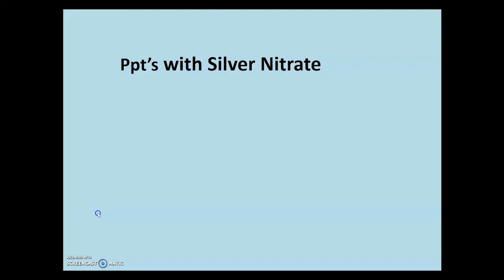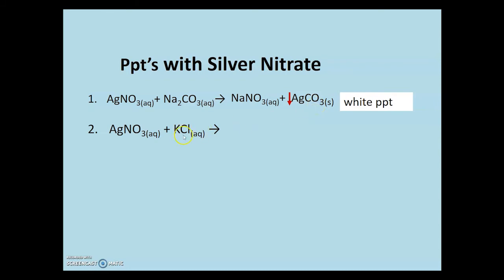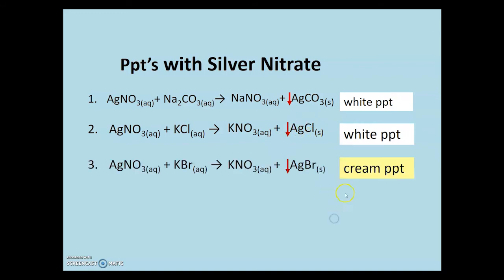When silver nitrate was added to the carbonate solution, a white precipitate of silver carbonate forms. Similarly with the chloride solution, a white precipitate of silver chloride. The bromide was slightly off-white, creamy color, and the iodide was the yellowest of them all.